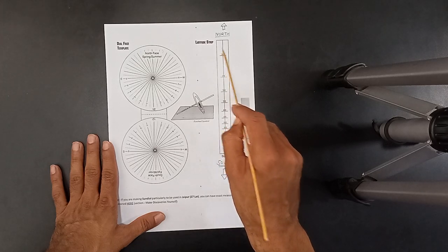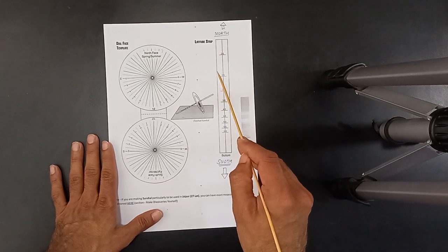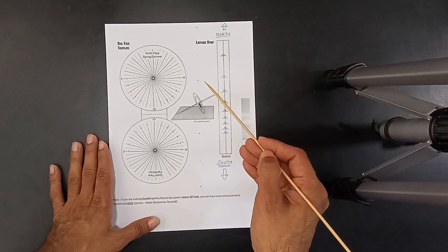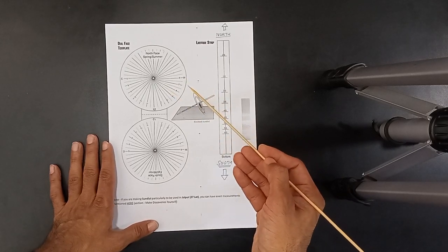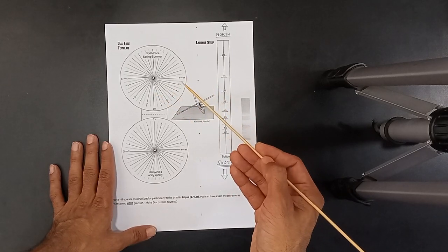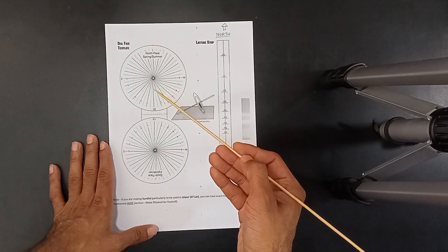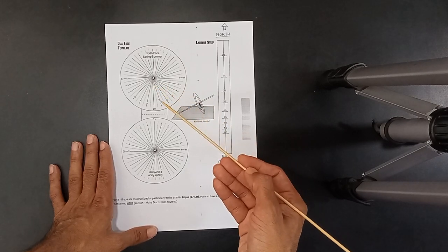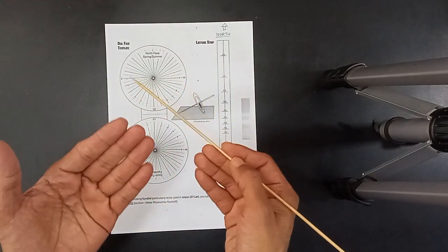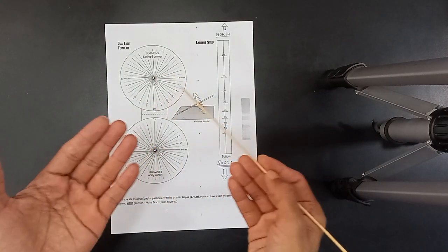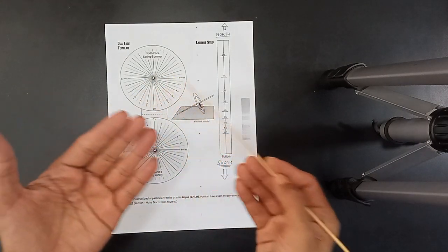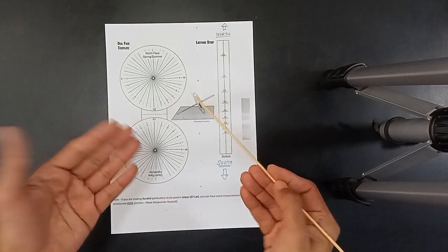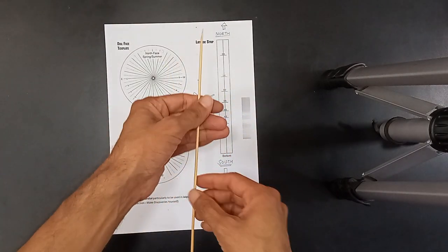Suppose you are living at a place which has a latitude of 25 degrees. It's very simple to find the latitude of your place. You go on Google and search the latitude by putting the name of whichever place you are living. Just search the latitude for that, for example latitude for Jaipur, and you will find the latitude angle.